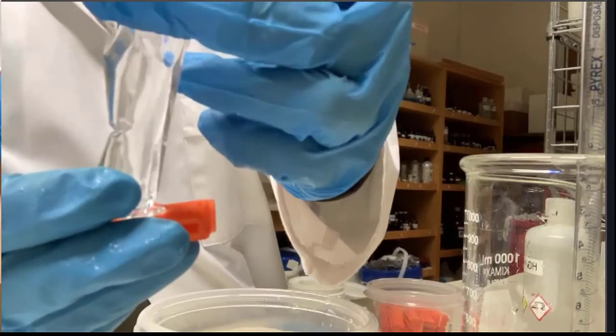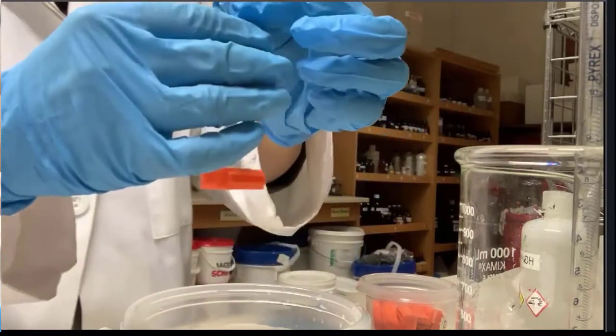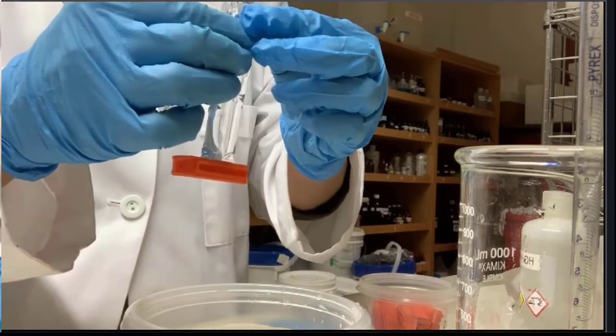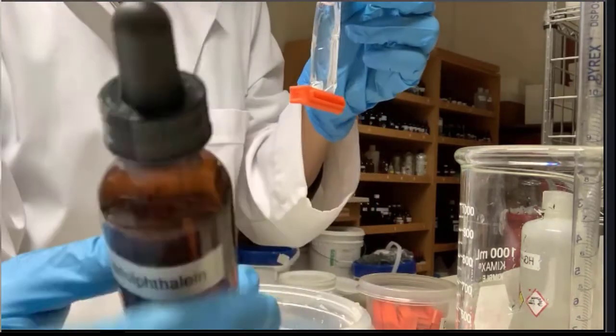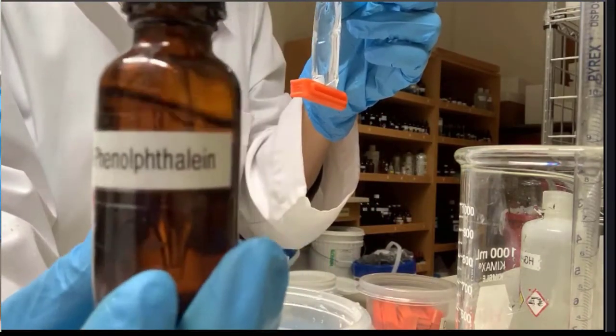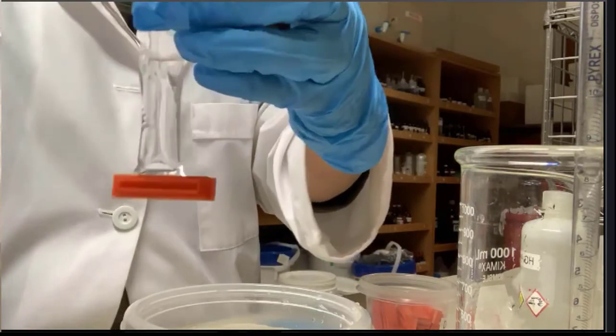So I have added 10 milliliters of tap water. I'm going to add three drops of the pH indicator that is called phenolphthalein into the tube.